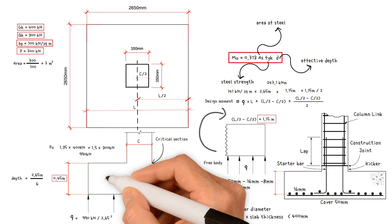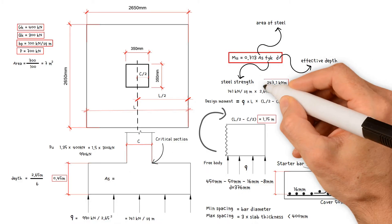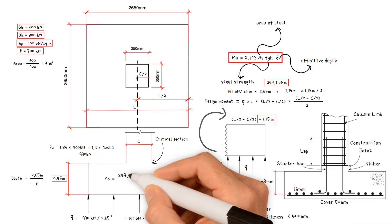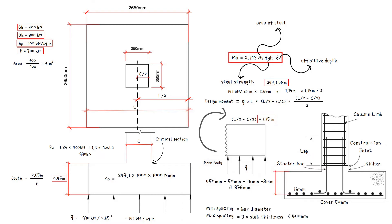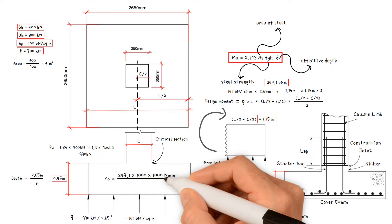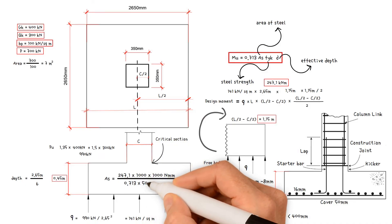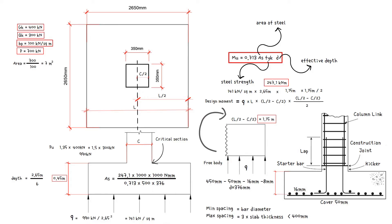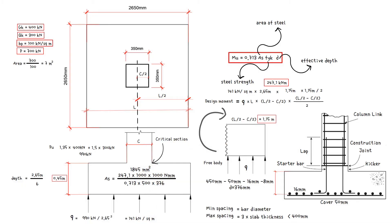Now we should be able to find the reinforcement required, which equals design moment 247.1 kilonewtons meter times 1000 times 1000 to convert it to newton millimeter, divided by 0.713, divided by steel characteristic strength 500, divided by effective depth 376 millimeters. This gives us a value of 1845 millimeters squared.